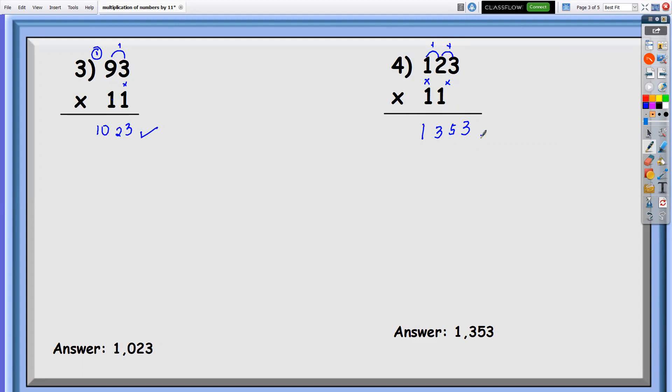And then we're going to multiply this. One times one, it's one. Therefore, the answer there is 1,353.